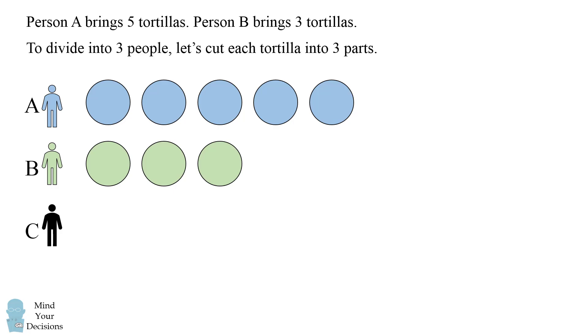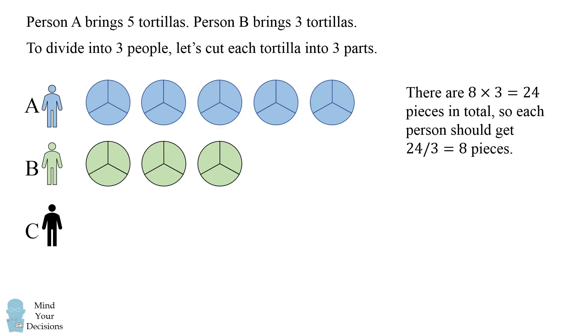Well, to divide into 3 people, let's cut each tortilla into 3 parts. Now we can count the number of parts, and we'll see there are 8 times 3, which equals 24 pieces in total. So, each person should get 24 over 3, which equals 8 of these pieces.